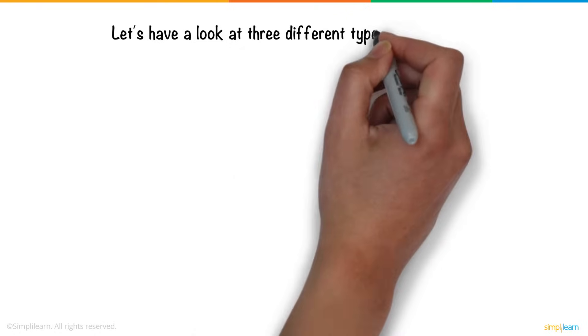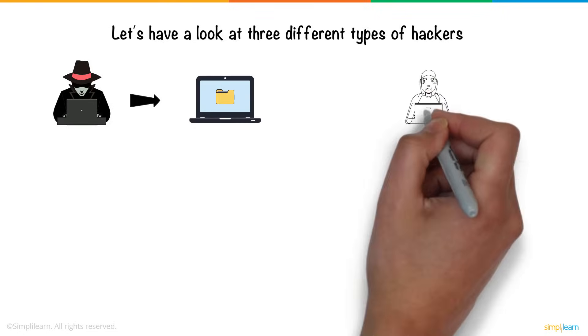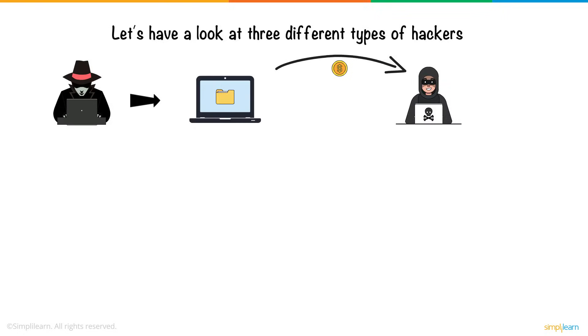Let's have a look at three different types of hackers. Black hat hackers are individuals who illegally hack into a system for monetary gain.